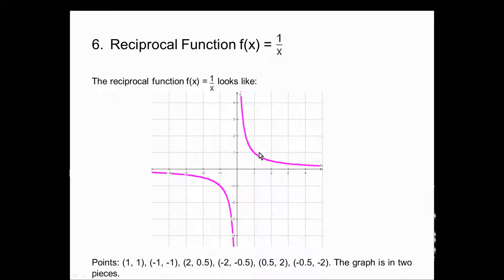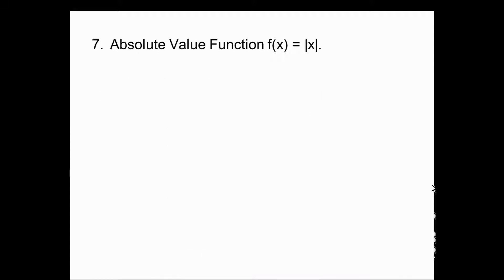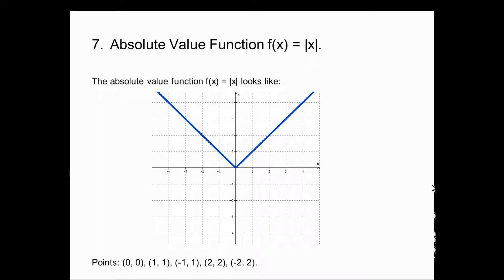Our seventh and last basic function: the absolute value function, f(x) = |x|. Remember, that's the one that graphs as a V. The points used were (0, 0), (1, 1), (−1, 1), (2, 2), and (−2, 2). So those seven graphs will act as our parent graphs for many of our examples — become familiar with their shapes and their names.